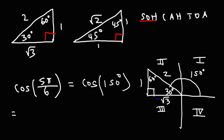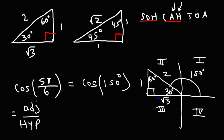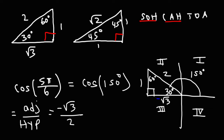Cosine 150 degrees corresponds to cosine of the reference angle 30 in quadrant 2. Using SOHCAHTOA, cosine equals adjacent over hypotenuse. Adjacent to 30 is negative square root of 3, and the hypotenuse is 2. So cosine of 5π over 6, which equals cosine 150, is negative square root of 3 over 2. That's the exact value.